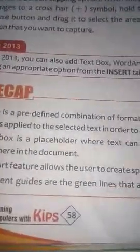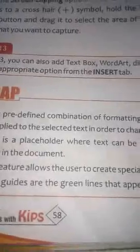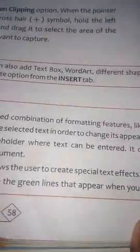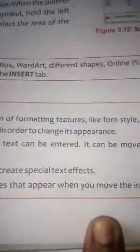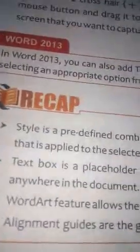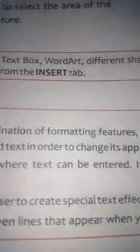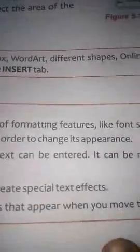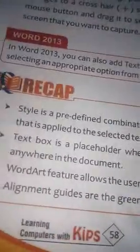Now, recapping this chapter: a style is a pre-made combination of formatting features such as font style, colors, and size of the text, that is applied to selected text in order to change its appearance.